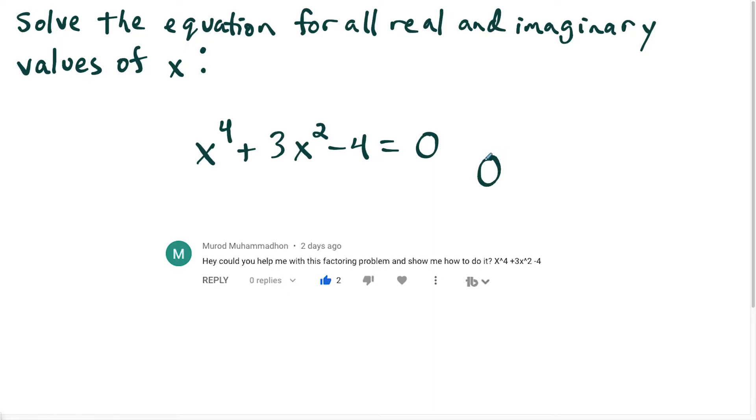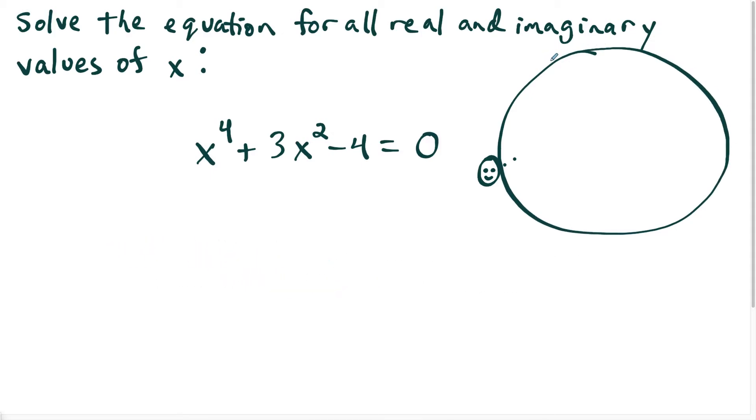What I think of for something like this is I noticed this has the shape of a quadratic trinomial, except the only difference here is that instead of x squared, we have x squared squared plus three x squared minus four is equal to zero. So if in a sense I say u is equal to x squared, I could rewrite this or think of this in my head as u squared plus three u minus four is equal to zero.